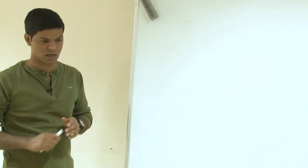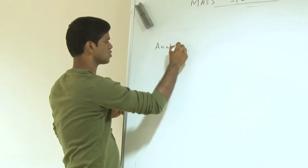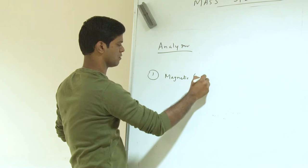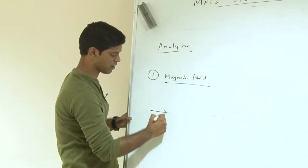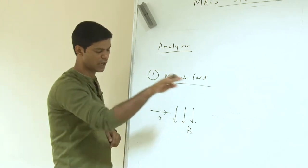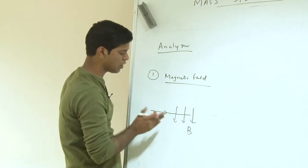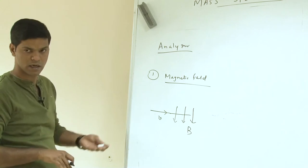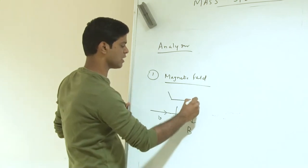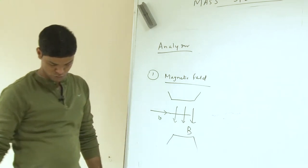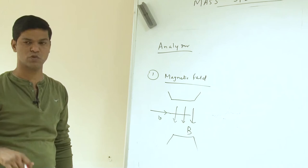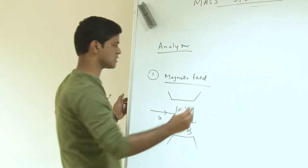We will now discuss about the analyzer. There are various kinds of analyzers in practice. One of the more precise ones is always the magnetic field sector. In that, as we discussed, you have a velocity and you apply a magnetic field. Based on the right-hand rule, the ions will divert and follow different pathways and disperse. The magnetic field sector always gives you more precise numbers compared to the electric field analyzer.